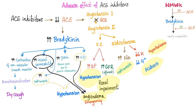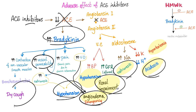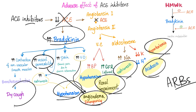Side effects of ACE inhibitors: ACE inhibitors inhibit ACE, which means lots of bradykinin because it's uninhibited — causing dry cough, angioedema, hypotension, renal impairment, natriuresis, acidosis, and hyperkalemia. Angiotensin receptor blockers, on the other hand, rarely cause cough or angioedema.